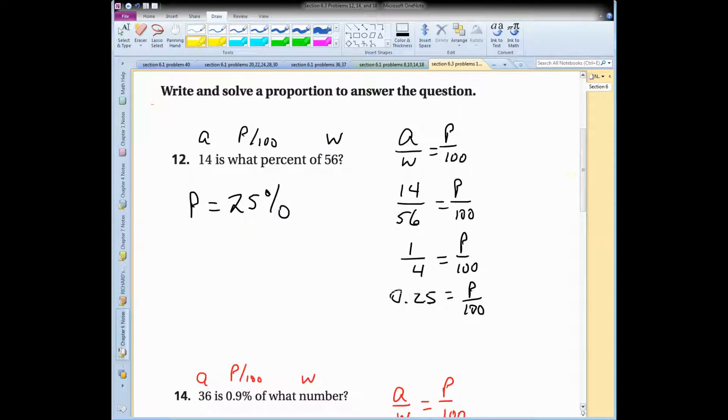The directions say write and solve a proportion to answer the question. So this is the proportion that I'm writing. And notice how I label the different parts here. There's my A. P over 100, that's what percent, and the whole is 56.